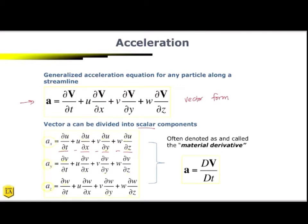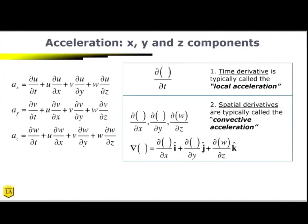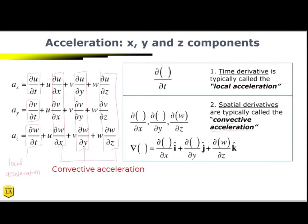When you look at these equations as a whole, this is often denoted as the material derivative. So the material derivative is this capital DV over capital DT. When we break these into smaller pieces, the time derivative is typically called the local acceleration. So each of these are called the local acceleration. And the spatial derivatives, so that would be all of these, these are our convective accelerations. So these are really important terms that your book often talks about. So I want to make sure you're aware of it.